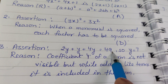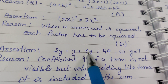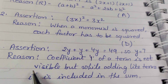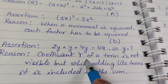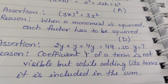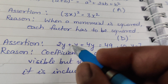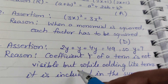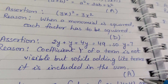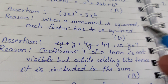Question 3 — Assertion: 2y + y + 4y = 49, so y = 7. Check: 2+1+4 = 7, so 7y = 49 gives y = 7 — assertion is true. Reason: The coefficient 1 of a term is not visible but is included when adding like terms. This correctly explains the assertion, so the answer is A.